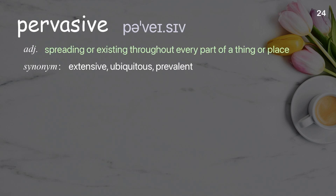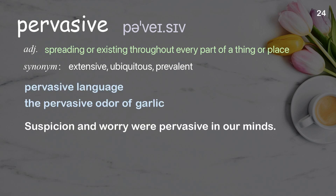Pervasive: Spreading or existing throughout every part of a thing or place. Examples: Pervasive language. The pervasive odor of garlic. Suspicion and worry were pervasive in our minds.